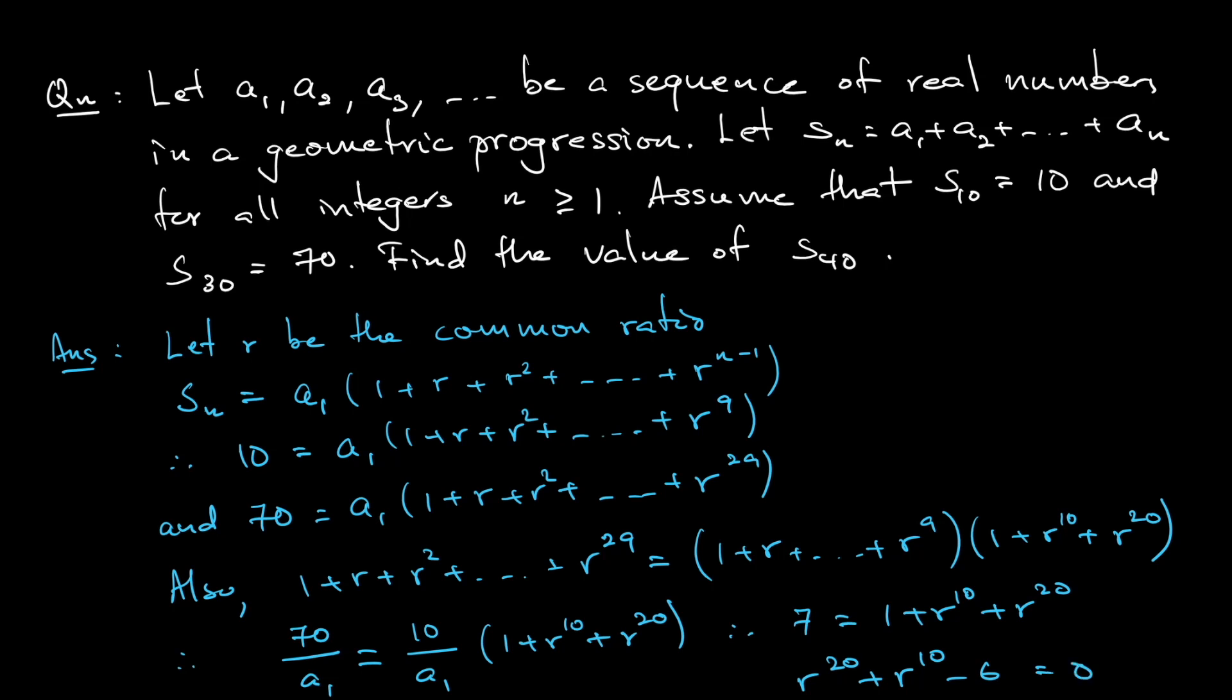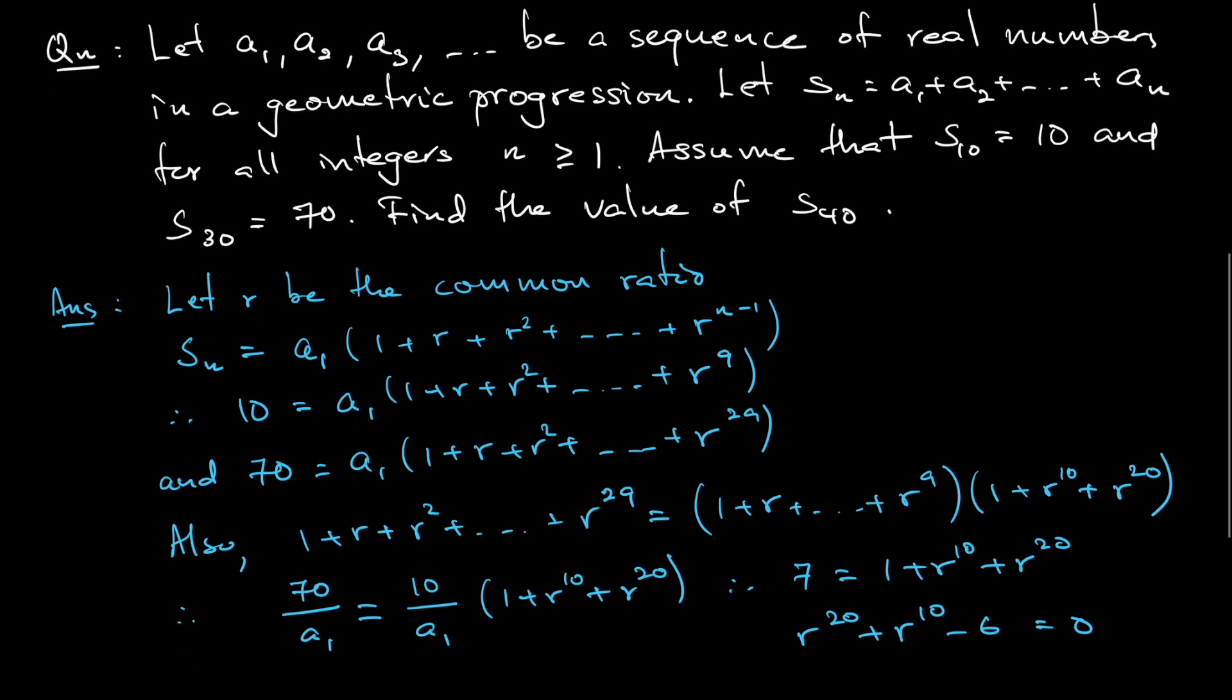This is just a quadratic equation. You can factorize this: r to the power of 10 minus 2 times r to the power of 10 plus 3 equals 0. So r to the power of 10 is either 2 or negative 3. But r to the power of 10, the power is even, so it cannot be a negative number. So you reject negative 3. So r to the power of 10 is 2. Keep that in mind.